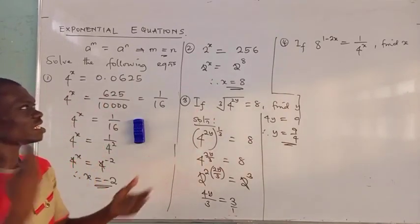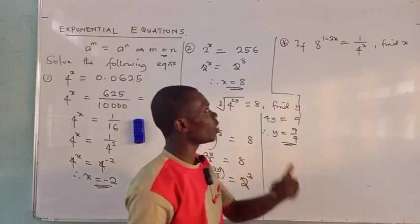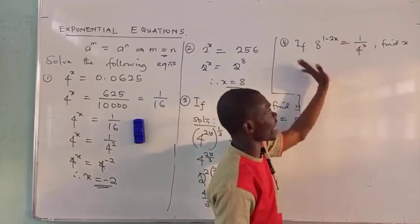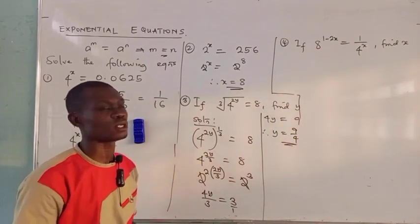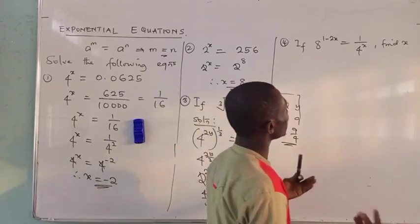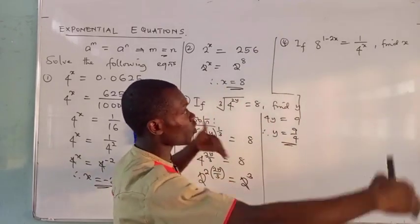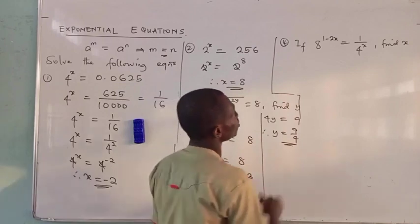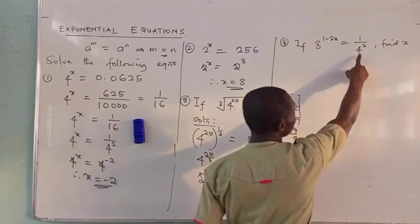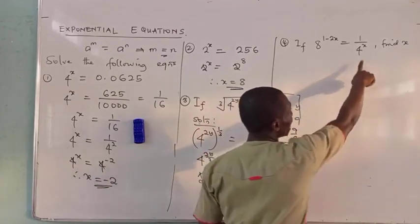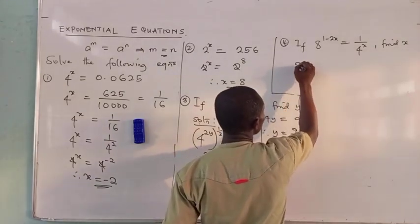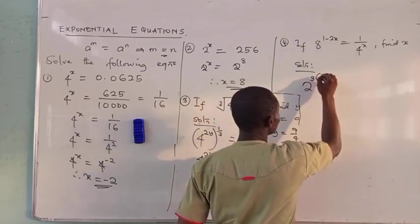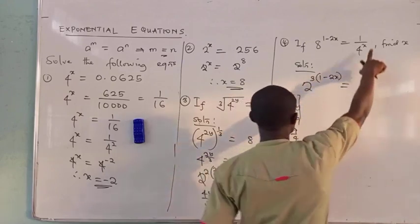Example 4: 8 raised to power (1 minus 2x) equals 1 over 4 raised to power x. Find the value of x. The goal is always to put both sides in index form with the same base. We can't use base 4 directly, but we can take both sides to base 2. So 8 to base 2 is 2 cubed, and that 3 multiplies the existing power (1 minus 2x).